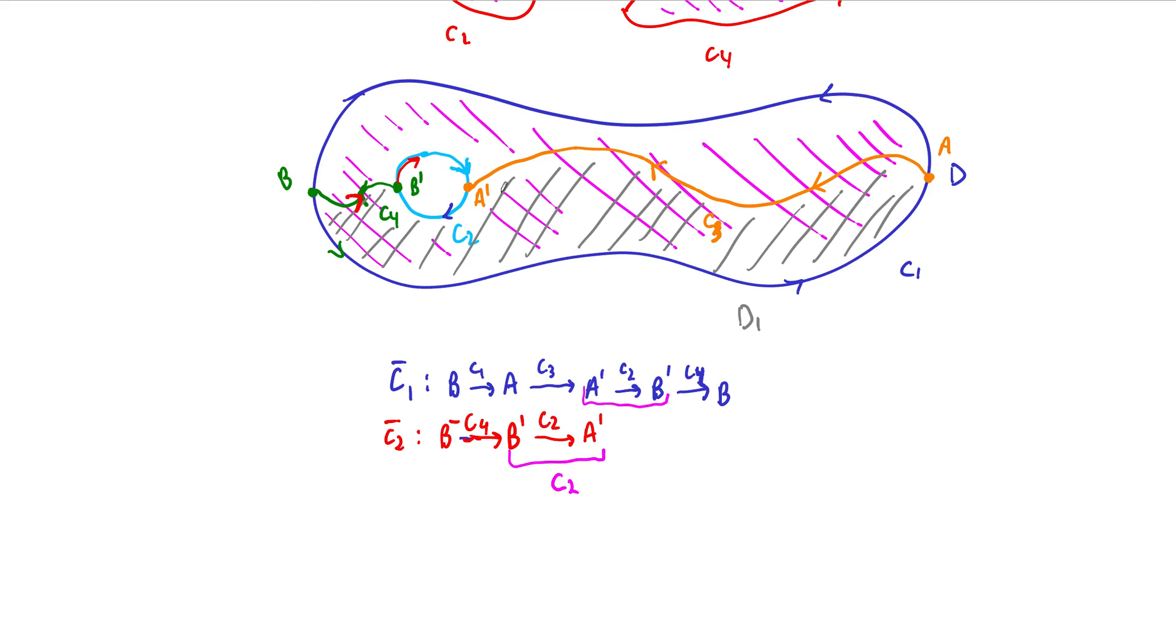All right, now what? Well, the next step is I need to get out of here, right? So at A prime, I pick up and I go back along opposite orientation along C3. So at this point, I'm going to take negative C3 back to the point A. So again, this portion of this curve cancels with this portion. They're canceled out. This portion of C3 is going to cancel this portion of C3. Canceled out, right?